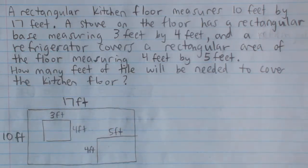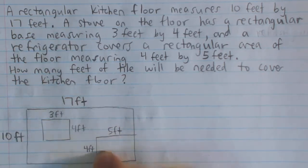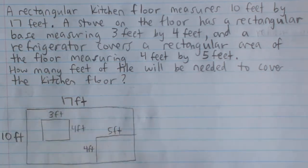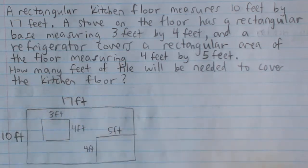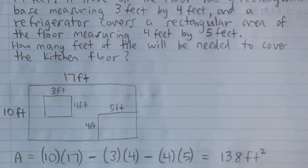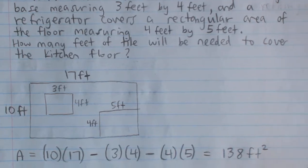To do this, what we have to do is calculate the entire area of the kitchen and subtract the area of the stove and the refrigerator. Remember, the area of a rectangle is base times height.